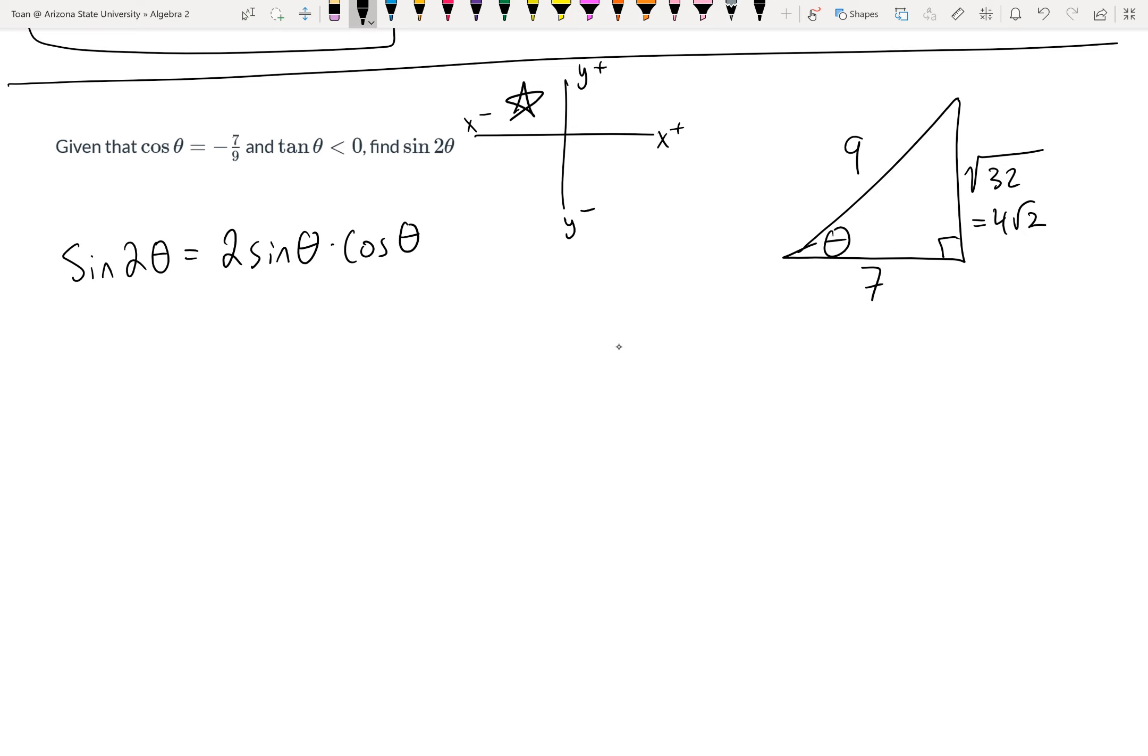Which means sine, when I substitute, is going to be positive because sine is positive in quadrant 2. So the answer should be 2 times sine θ,